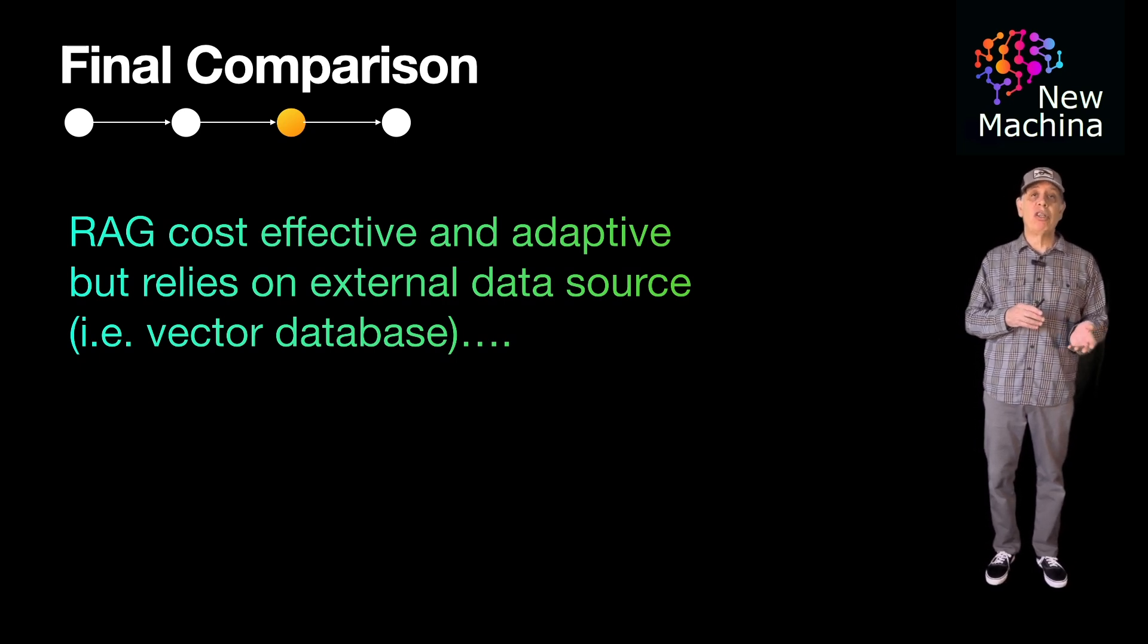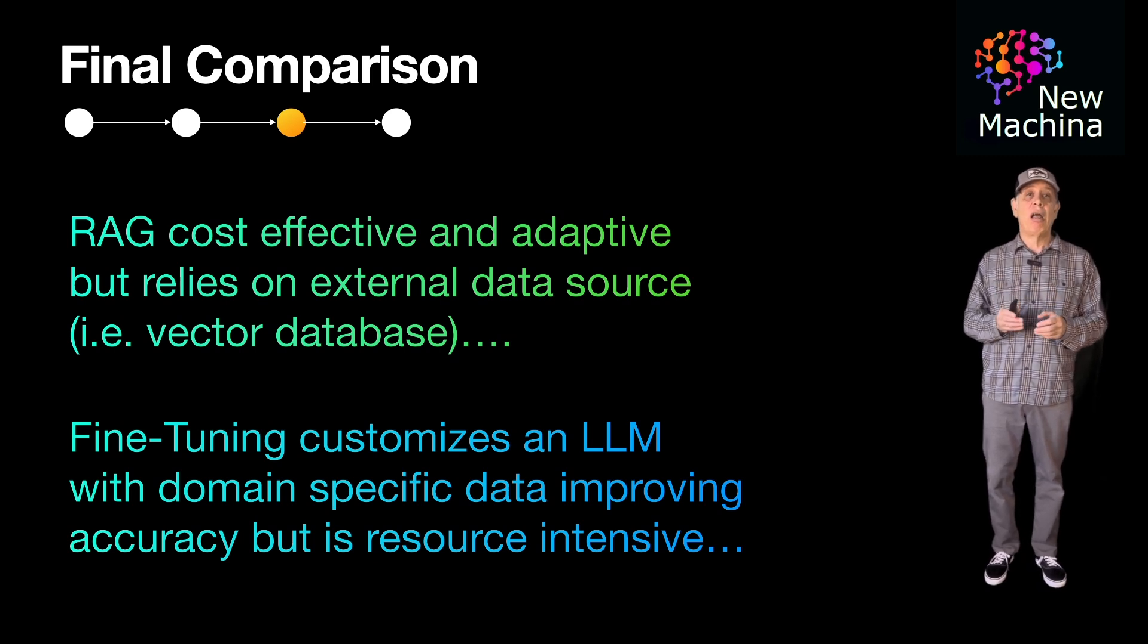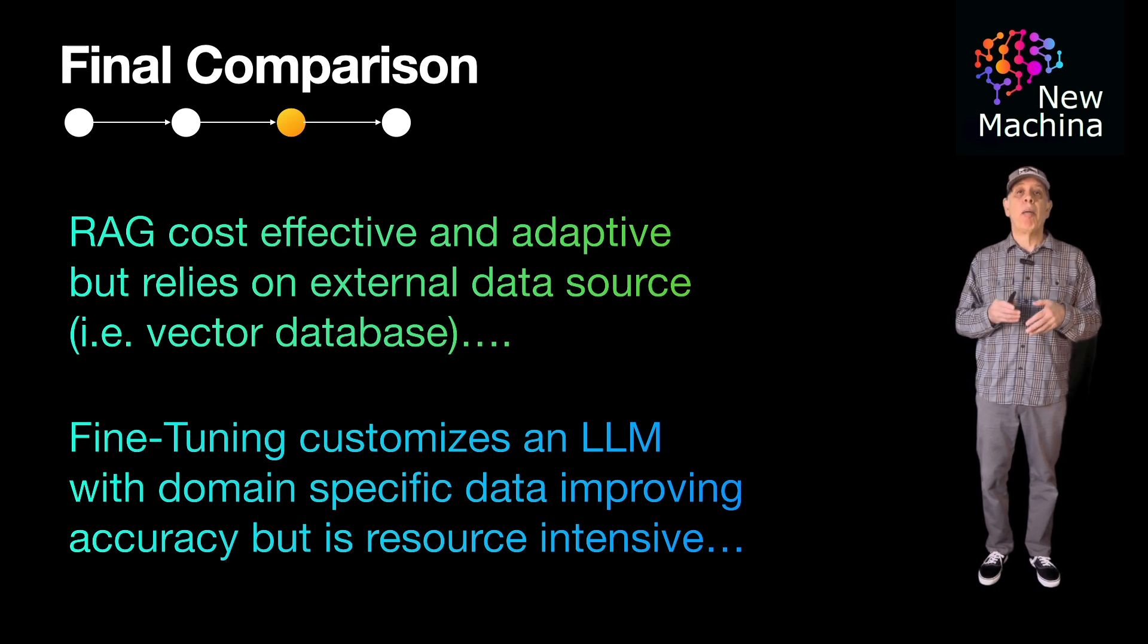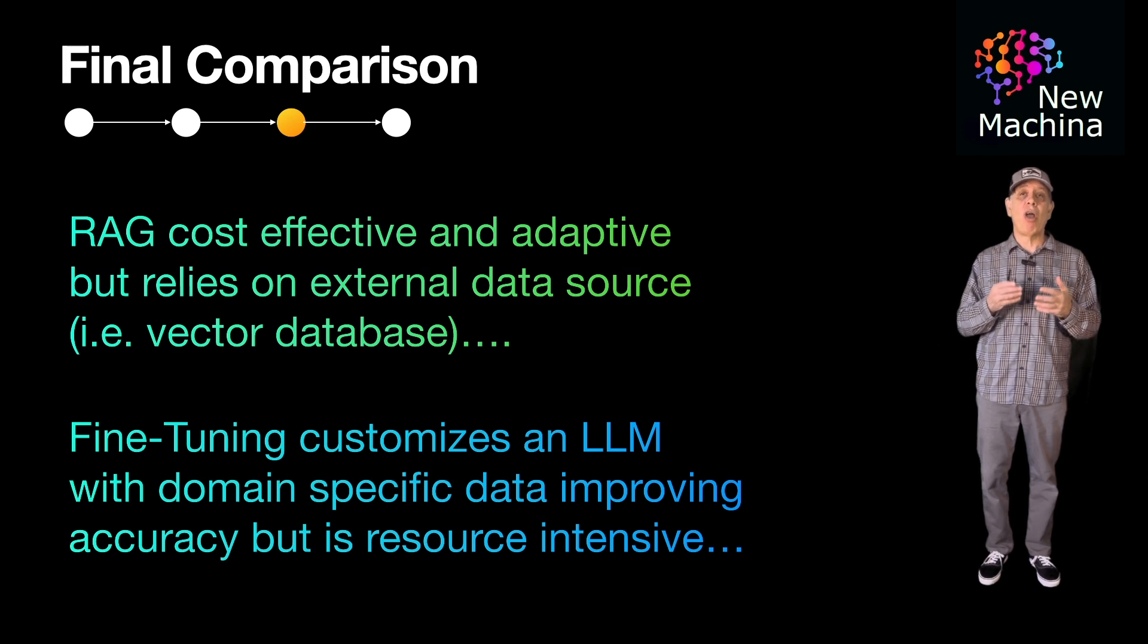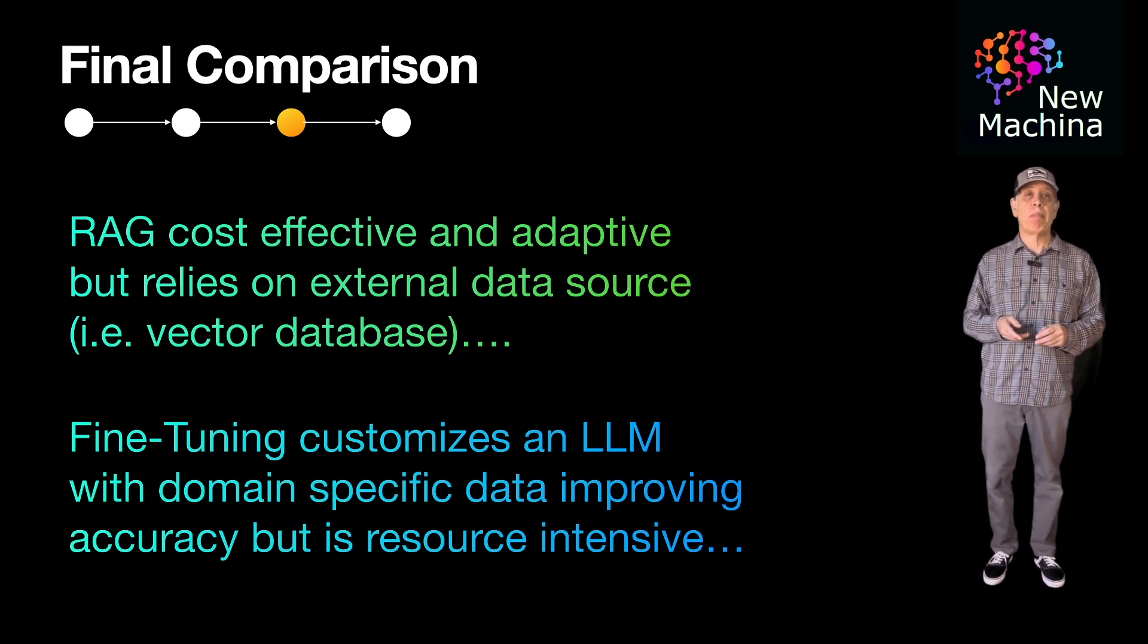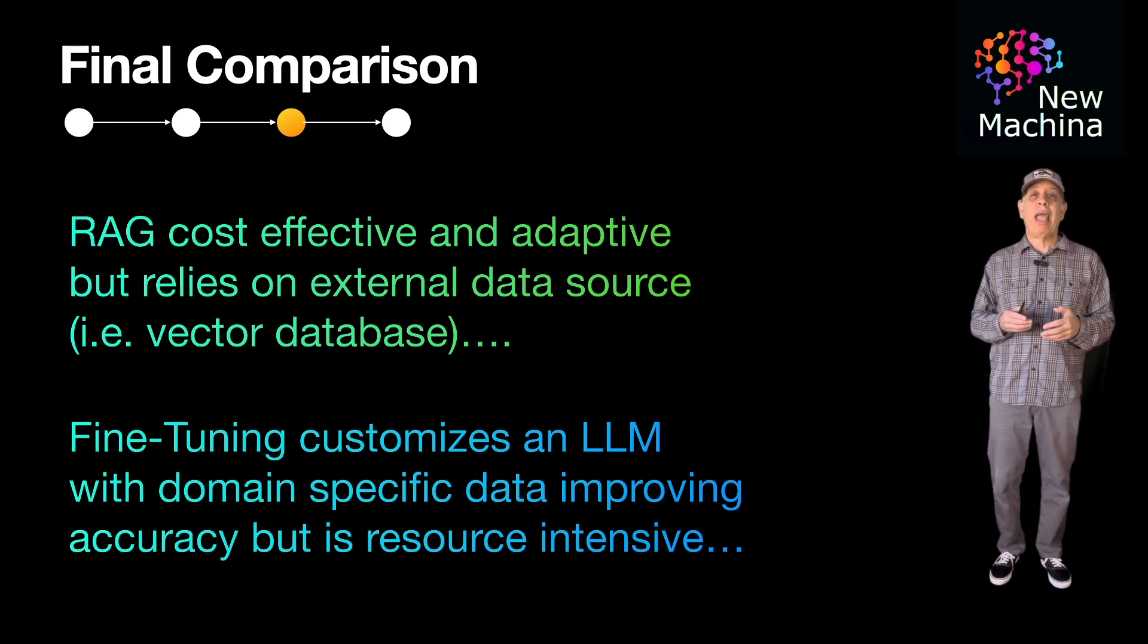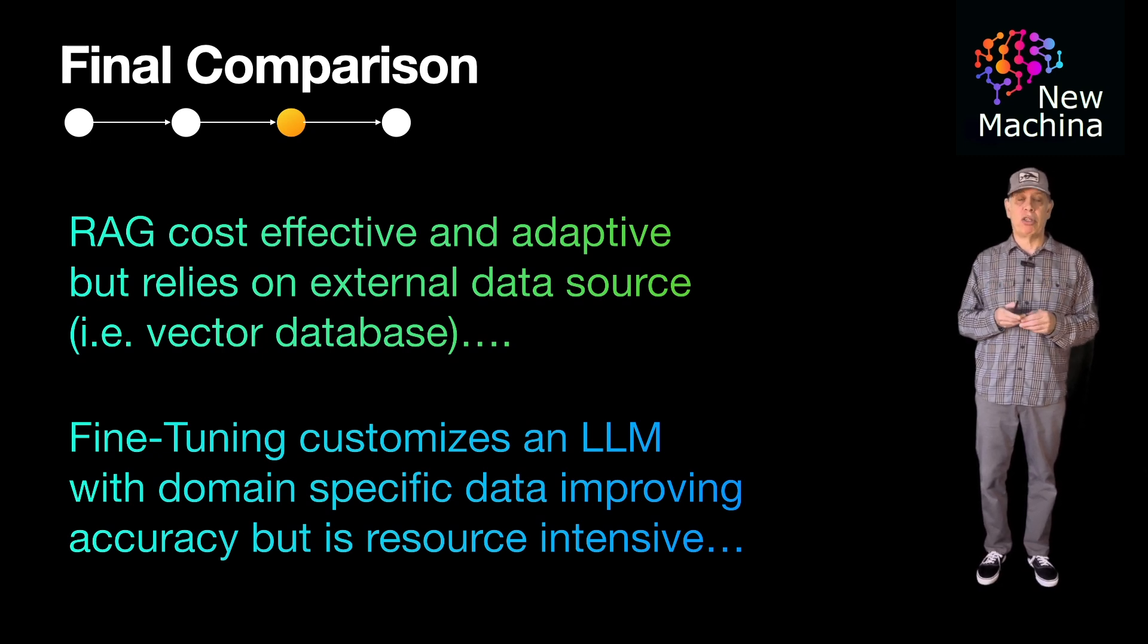Alternatively, fine-tuning customizes an LLM with domain-specific data for improved accuracy and specialized tasks, but is resource-intensive. Additionally, fine-tuning results in the LLM knowledge being fixed to the date it was trained on during the fine-tuning process. RAG is ideal for scenarios needing flexibility and current up-to-date information while fine-tuning excels in tasks requiring deep domain specialization.